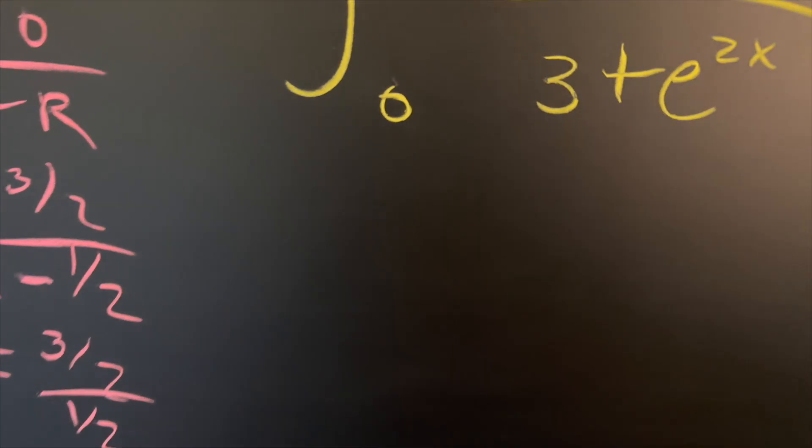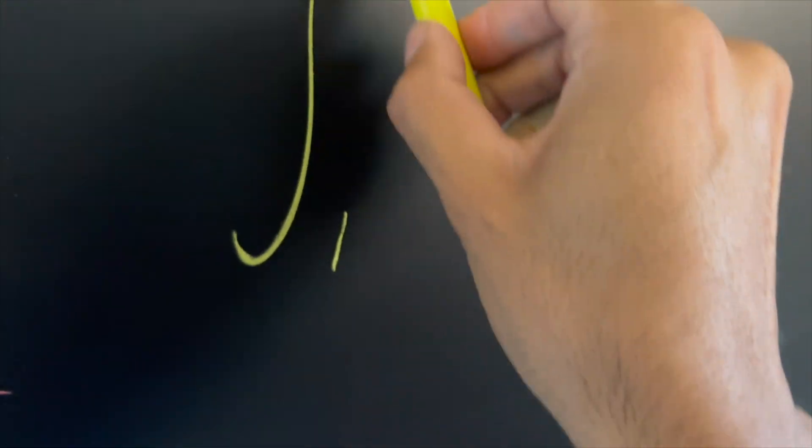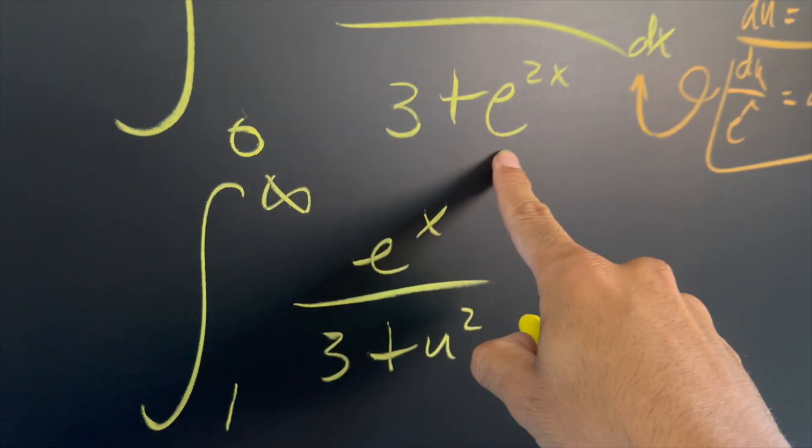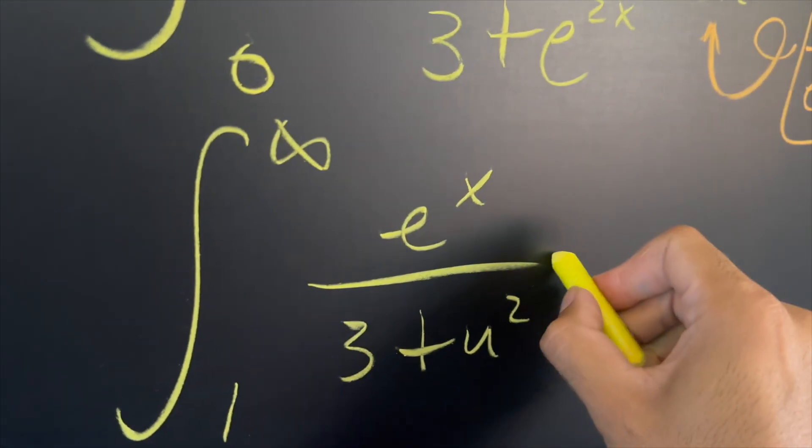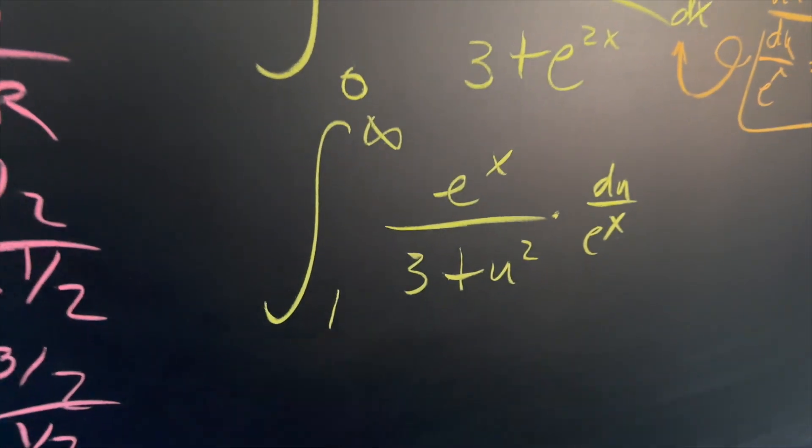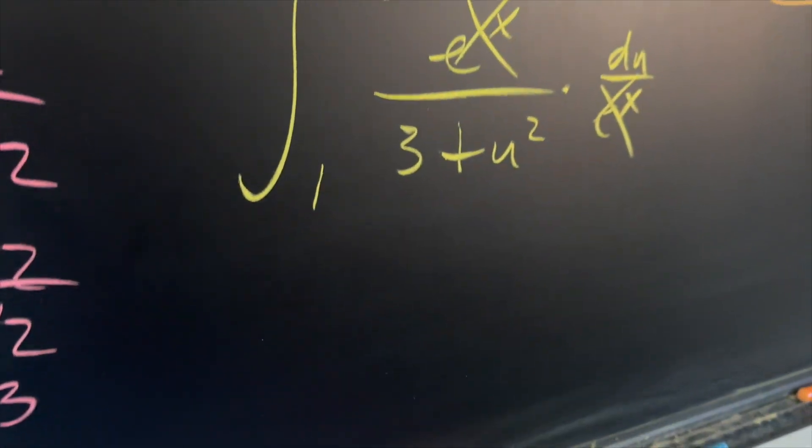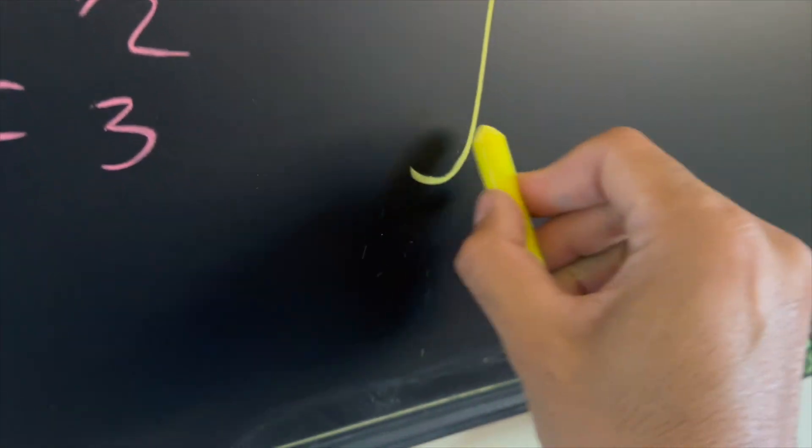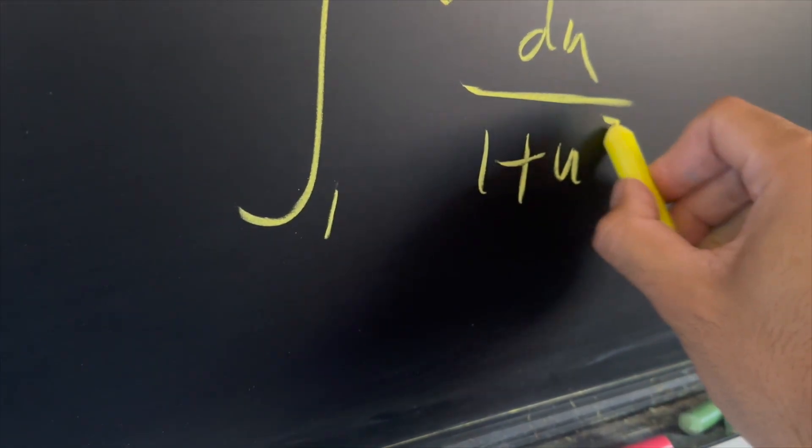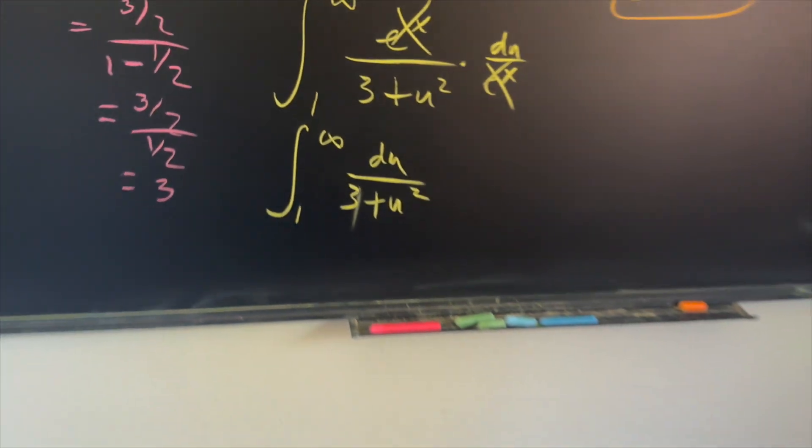So now our integral is going to become, we have one to infinity of e to the x over three plus u squared. Because remember, our u value was e to the x times du over e to the x. And the e to the x is canceled out, which is exactly what we want because now we have a nice integral, one to infinity of du over one plus u squared. Whoops, that's not a one. That should be a three.